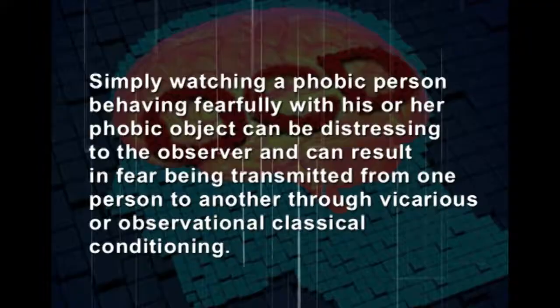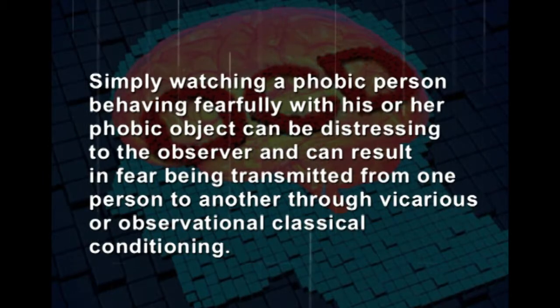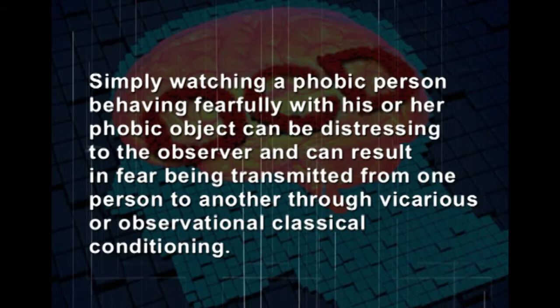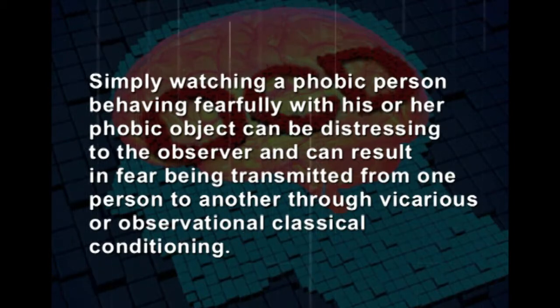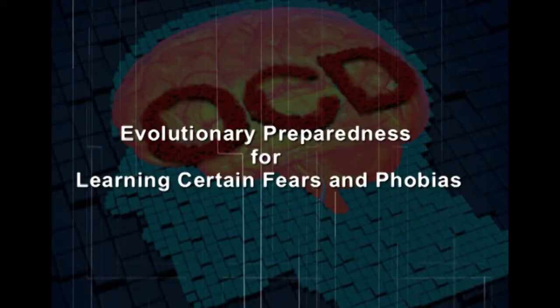Direct traumatic conditioning is not the only way people learn phobic fears. Vicarious conditioning can occur simply by watching a person who has a fear toward a particular object or situation — distressing the observer and transferring the fear through observational classical conditioning. Even watching a non-fearful person undergo a frightening experience can lead to vicarious conditioning. Additionally, primates and humans appear evolutionarily prepared to rapidly associate certain objects such as snakes, spiders, water, and enclosed spaces with frightening events, carried forward through evolution.